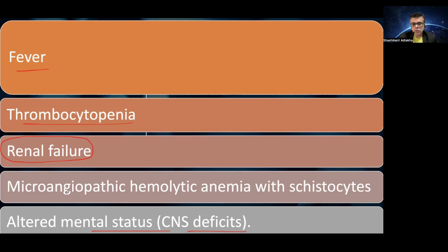The fifth component of the pentad is microangiopathic hemolytic anemia. This occurs because microthrombi clogging the blood vessels traumatize RBCs as they pass through. The RBCs get friction on their surface, become fragmented, and this generates RBC fragments known as schistocytes. Schistocytes are therefore seen on the peripheral smear.